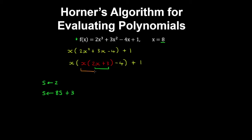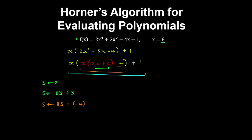Then, from inside to outside, we have s equal to x multiplied by s, where s equals the previous calculation being 8s plus 3. Then we add the next coefficient, which is minus 4. And finally, we multiply this result by x again, so we have s is 8s plus the next coefficient.